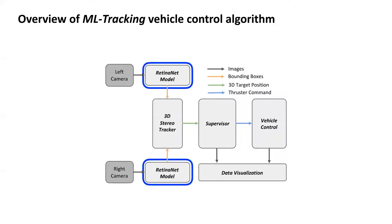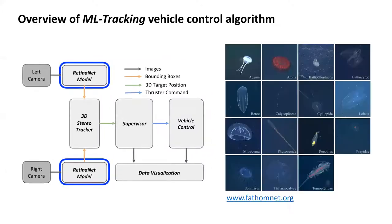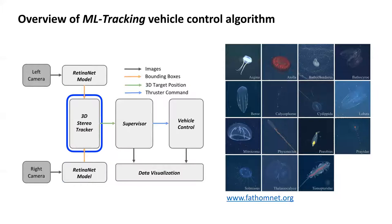We trained a RetinaNet model using FathomNet, an underwater image training set, by selecting common midwater animal classes. The bounding boxes from the detector are fed into the 3D stereo tracker module to estimate 3D positions of detected objects, and these data are later fed into the supervisor module that contains logic for mission planning. More details about the ML tracking algorithm can be found in the paper.